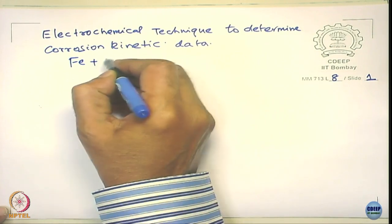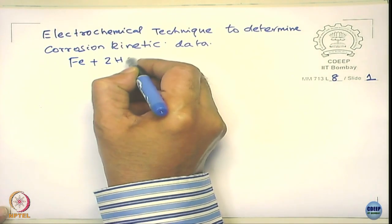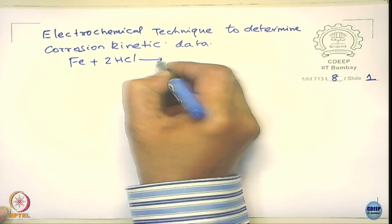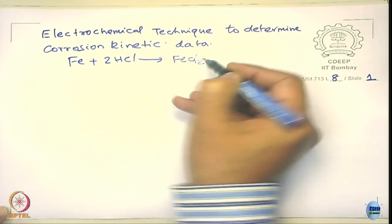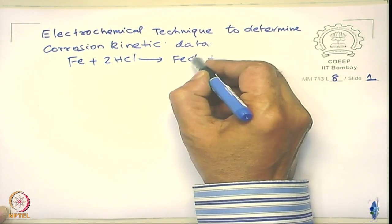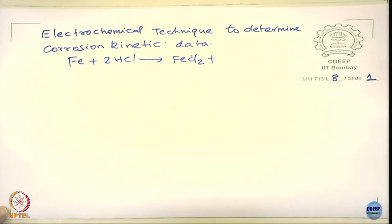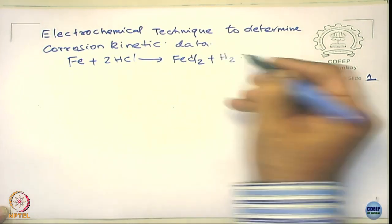Now let us start with the so-called Evans diagram. Let us take an example of iron corroding in hydrochloric acid. It corrodes into ferrous chloride and hydrogen is evolved. We need to look at the corrosion kinetics of that.